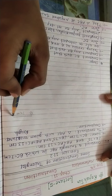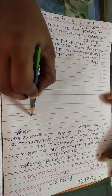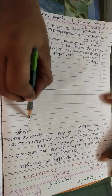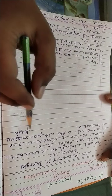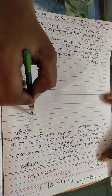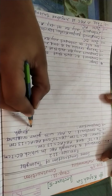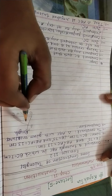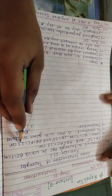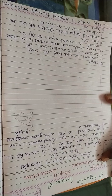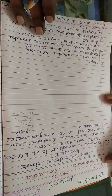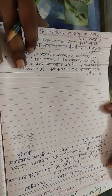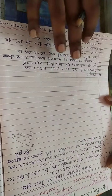First, we will draw BC of 7 cm, and for angle B we will draw a 75 degree angle making ray Bx. On this ray Bx, we will get a point A such that AB plus AC makes the sum of 13 cm. So to get the real construction, we will now start the steps and draw the construction related to this.